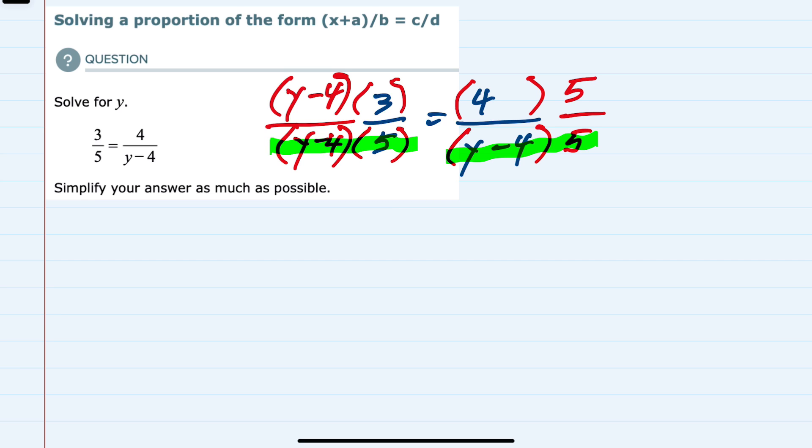And if two fractions are equal to each other and they have the same denominator, that means that their numerators, in this case, y minus 4 times 3, has to be equal to the other numerator, 4 times 5. And you may have heard that, in effect, this is called cross-multiplying, because on the left-hand side, we have 3 times y minus 4, and on the right-hand side, we have 4 times 5.